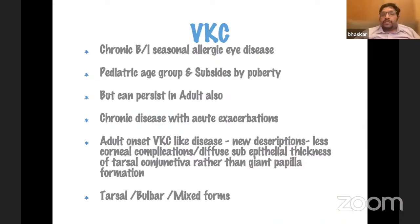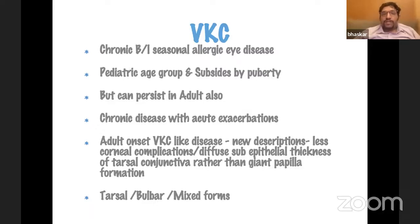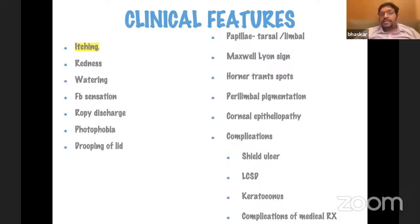VKC is defined as a chronic bilateral allergic eye disease which affects the pediatric age group primarily, but we now know that it can persist in adults. Sometimes you can also see what is called adult onset VKC-like disease. It could either have a tarsal form, a bulbar form, or a mixed form. Itching is the most important symptom apart from other non-specific complaints.